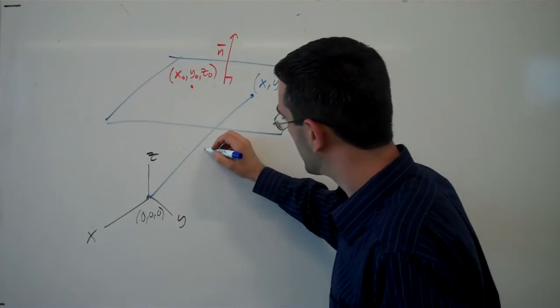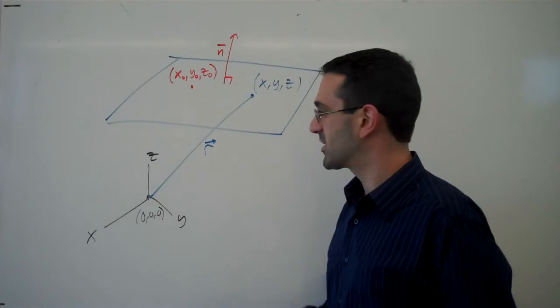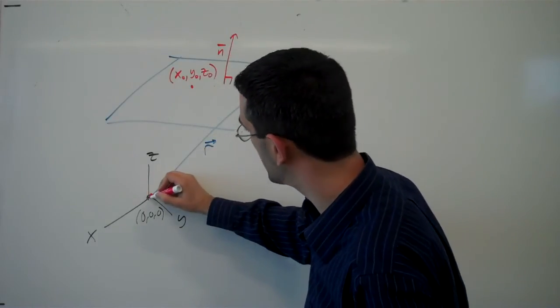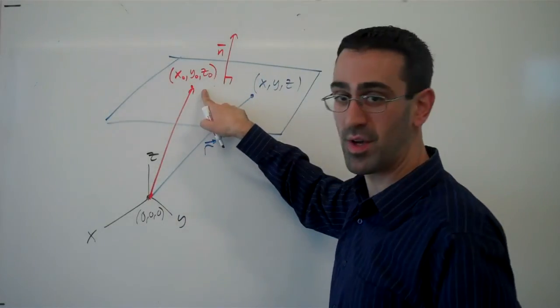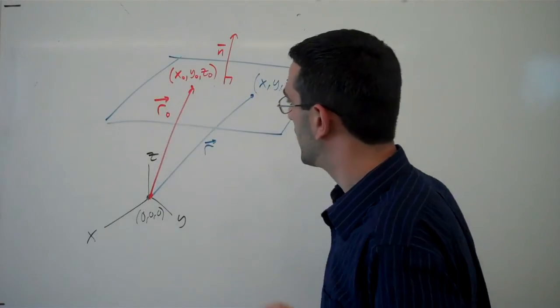We're going to call this vector r. Now we're going to introduce a second vector running from the origin, again a position vector, out to the point x_not, y_not, z_not, and we'll call this vector r_not.